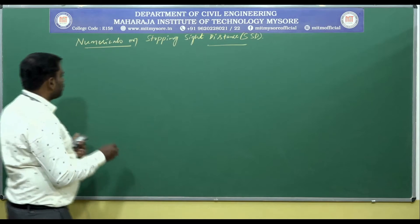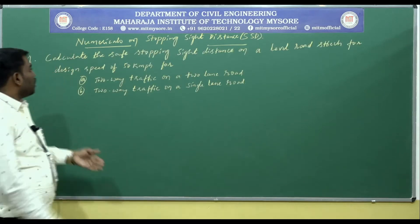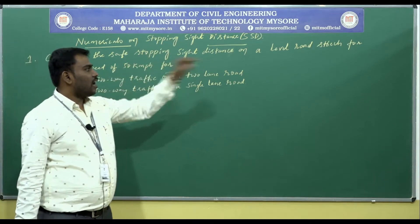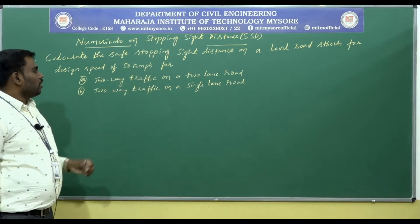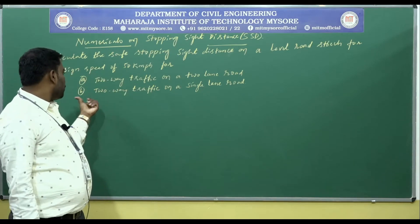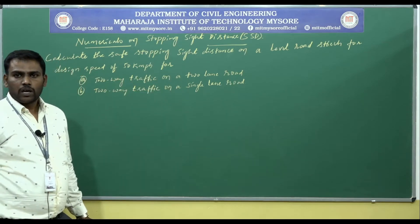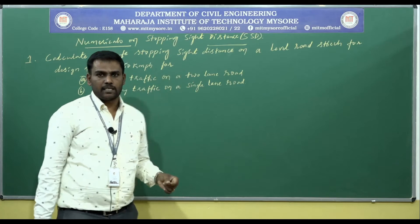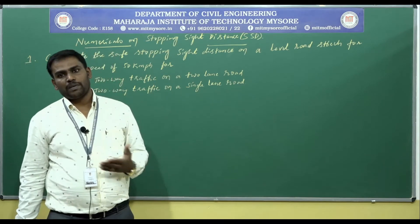Moving on to Problem 1: Calculate the safe stopping sight distance on a level road stretch for a design speed of 50 km/h for (A) two-way traffic on a two-lane road, and (B) two-way traffic on a single-lane road. Two-way traffic on a two-lane road requires 1 times the SSD, but two-way traffic on a single-lane road requires twice the SSD.